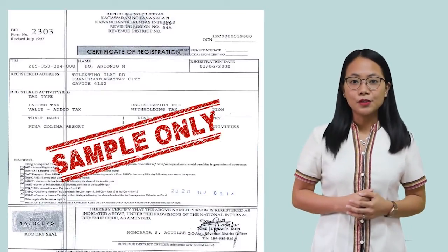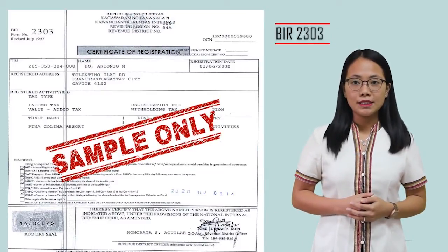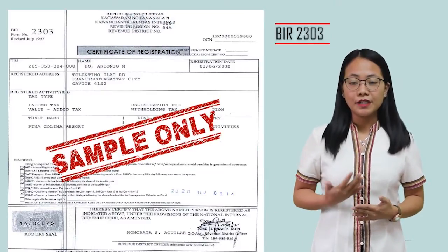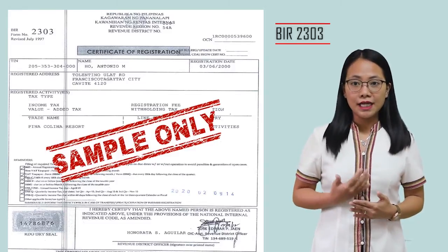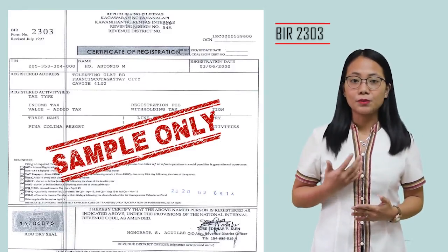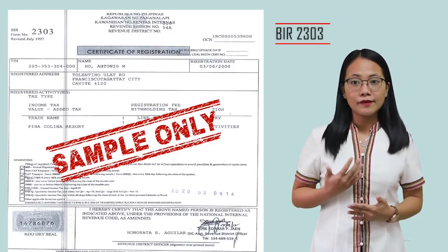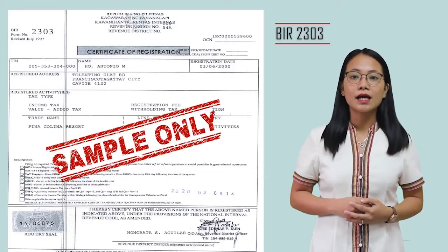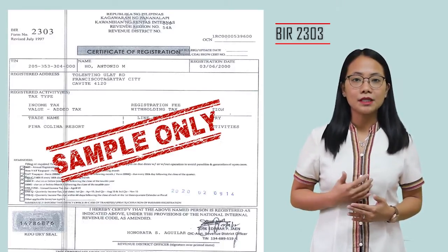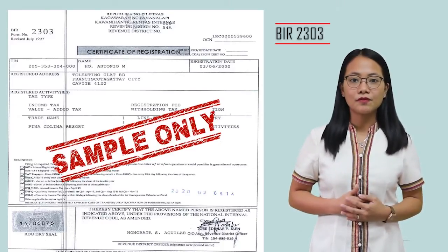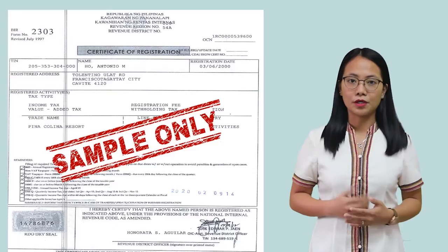Lastly, BIR 2303 or Certificate of Registration. This is the certificate given by the Bureau of Internal Revenue to a registered business. A copy of this must be submitted by the service provider to the buyer.